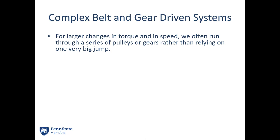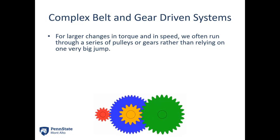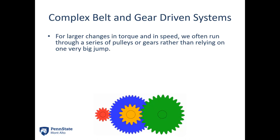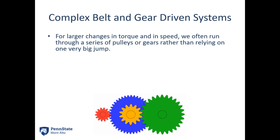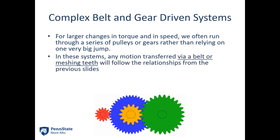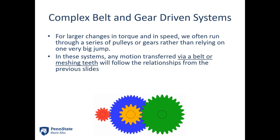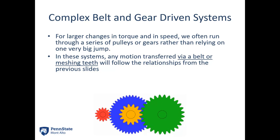For larger changes in torque and speed — say we want the input running 50 times as fast as the output — we run through a series of pulleys or gears rather than relying on one very large jump. For example, the red gear drives the blue gear; the blue gear is on the same axis as the yellow gear; and the yellow gear drives the green gear, stepping down the speed significantly. Any motion transferred via belt or meshing teeth follows the relationships from the previous slide, so r1·omega1 equals negative r2·omega2 going from red to blue, and similarly from yellow to green.